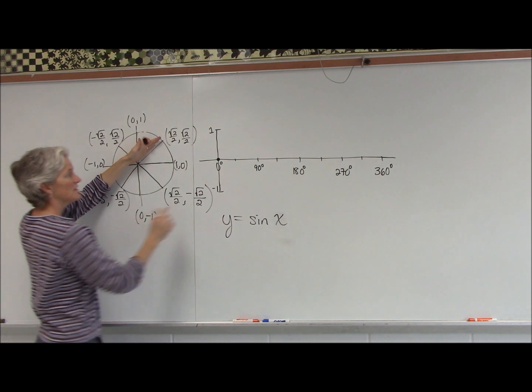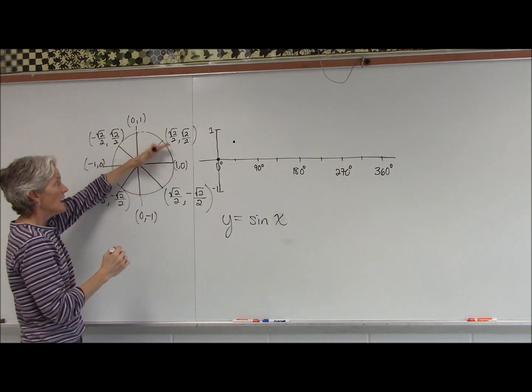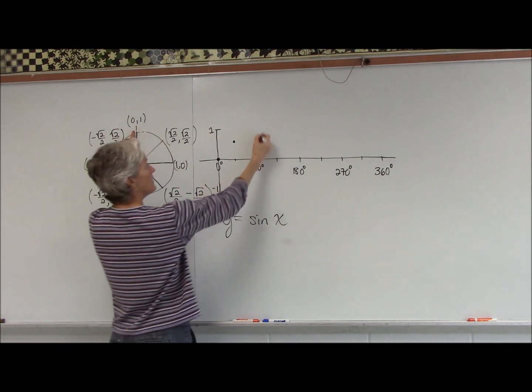45 degrees has a sine of square root of 2 over 2. 90 degrees has a sine of 1.